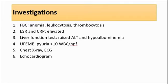For investigations, we can do a full blood count. In Kawasaki disease we expect to see anemia, leukocytosis, and thrombocytosis. Thrombocytosis — meaning high platelet levels — is normally seen in the convalescent or recovery phase. The second investigation is ESR and CRP — the erythrocyte sedimentation rate and C-reactive protein level — which are usually elevated, indicating active inflammation.